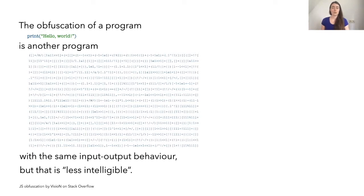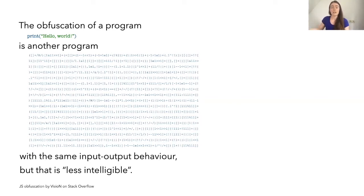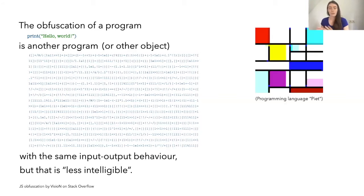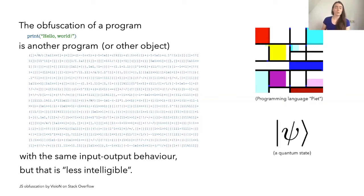Usually when we talk about the obfuscation of a circuit, we think of another circuit as being the obfuscation. But there is no fundamental reason why an obfuscation cannot be any other object, such as an image together with some public instructions on how to interpret that image. This image on the right represents a function written in the language Piet, named after the artist Piet Mondrian. And, spoiler alert, why can't an obfuscation be a quantum state that you can interact with in order to execute your program? The obfuscation of a program is really a very broad concept.